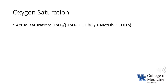Actual oxygen saturation is defined as the oxyhemoglobin concentration divided by the sum of all forms of hemoglobin: oxyhemoglobin, deoxygenated hemoglobin, methemoglobin, and carboxyhemoglobin, plus any other aberrant hemoglobin forms.